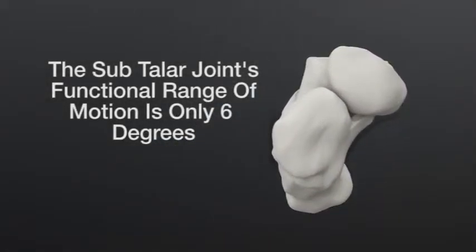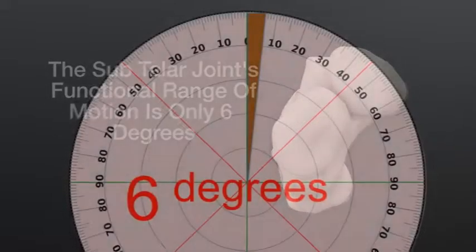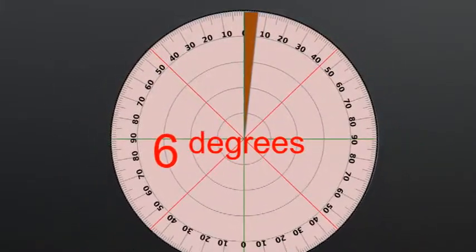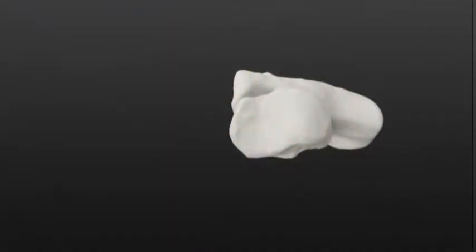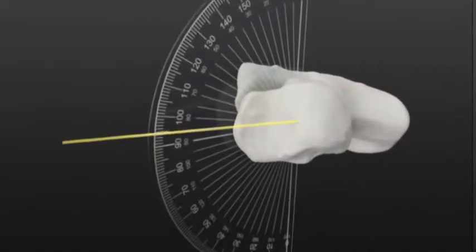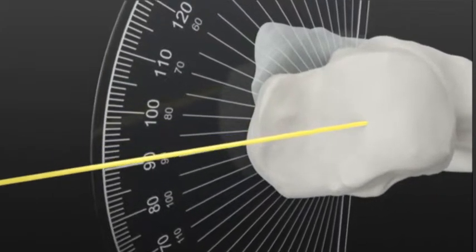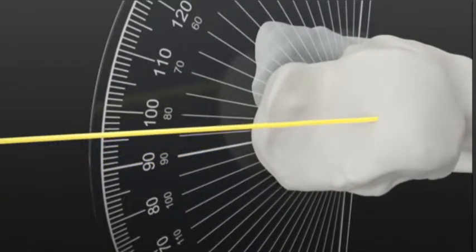Firstly, its functional range of motion is only 6 degrees. Isolating the talus and calcaneus and rotating around the subtalar axis 6 degrees looks like this. This motion is not postural collapse.